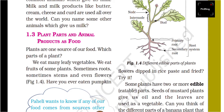We eat many leaf vegetables. We eat fruit of some plants, and we eat some plants — sometimes roots, sometimes stem, and even sometimes flowers.